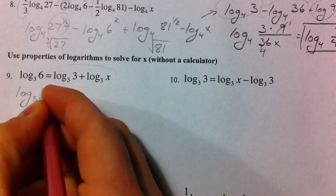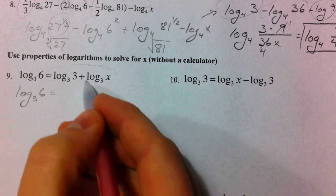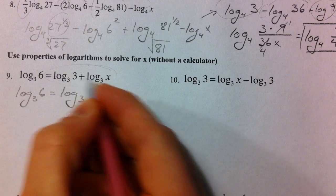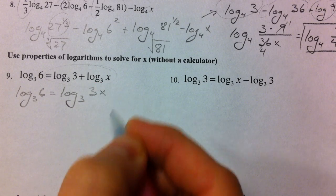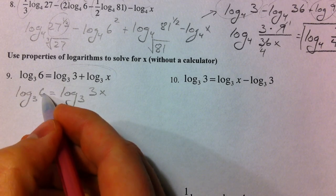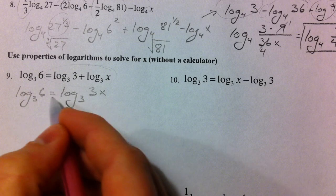Log base 3 of 6 equals log base 3 of 2. Logs that are added are 1 log that is multiplied. So now we have log base 3 of 6 equals log base 3 of 3x.